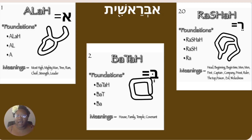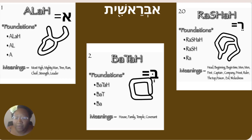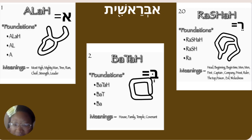And then we've got 'Rasha.' It says head, beginning, begin time, men, first, captain, company, priest, ruler, the top, poison, evil, wickedness.